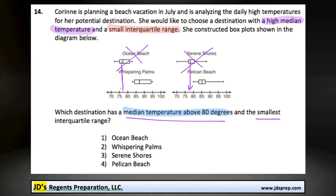But we want the one with the smallest interquartile range. The interquartile range is, of course, the distance from the first quartile to the third quartile on the box plot. It's quite clear just by looking at it that Pelican Beach has a smaller interquartile range — Whispering Palms has a much greater distance there.